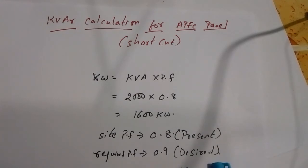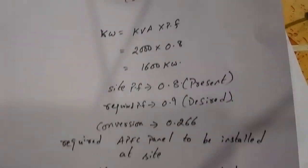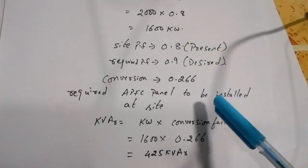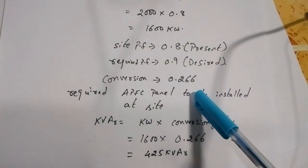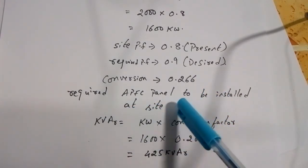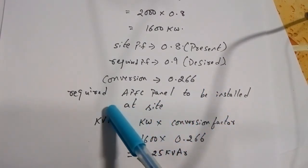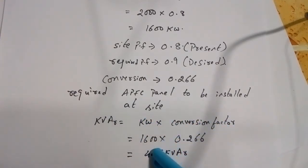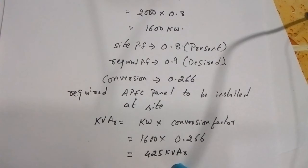The required or desired power factor is 0.9. The conversion factor to convert to the desired power factor of 0.9 is 0.266. So the required APFC panel to be installed at site is: kVAR equals kilowatt into conversion factor, that is 1600 into 0.266, which equals 425 kVAR.